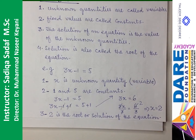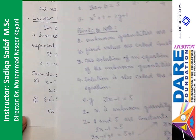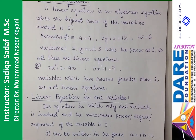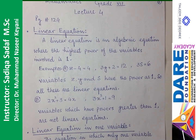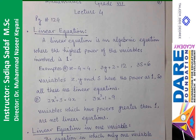I think aapko Algebraic Equation ki achi si samajh aa gayi hogi. Agla topic hai Linear Equation. Linear equation is an algebraic equation where the highest power of the variables involved is 1. Aisi algebraic equation jismein highest power variable ki 1 ho, tab woh algebraic equation linear equation kahlayegi.